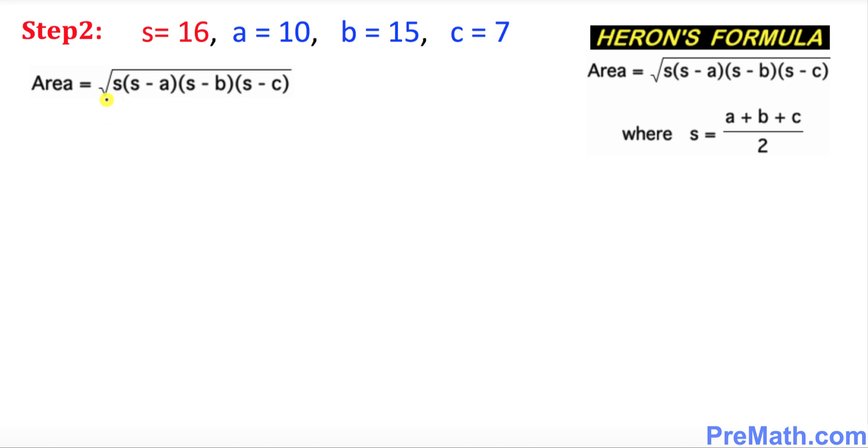And in this next step, we are going to calculate the area of the triangle by plugging in S, A, B, and C values as you can see in this formula. So the area is going to be: S is 16 times S minus A, which means 16 minus 10, times S minus B, which means 16 minus 15, times 16 minus 7.